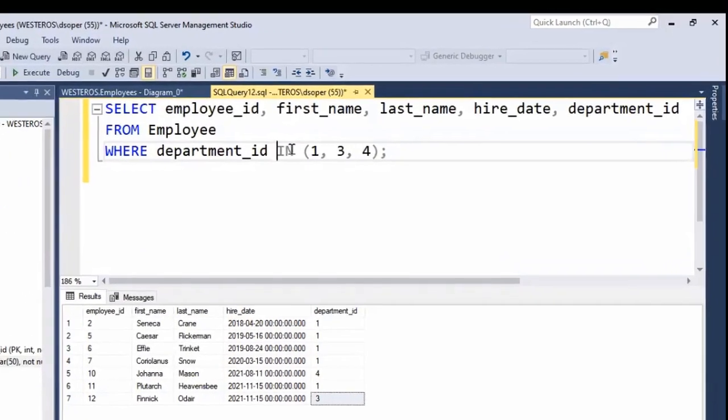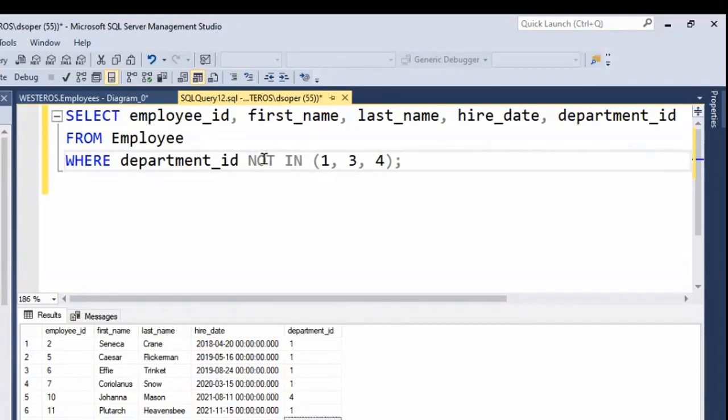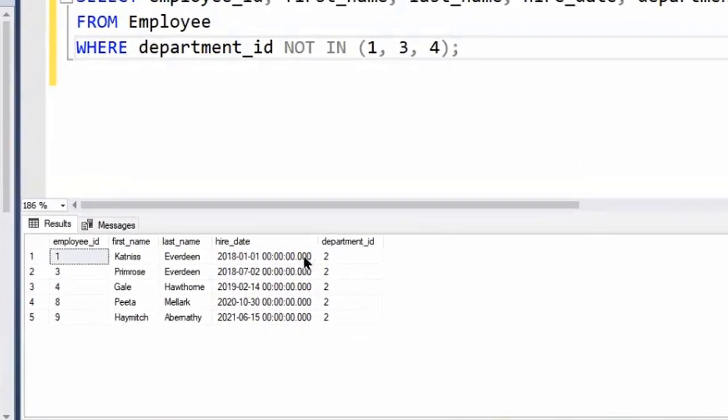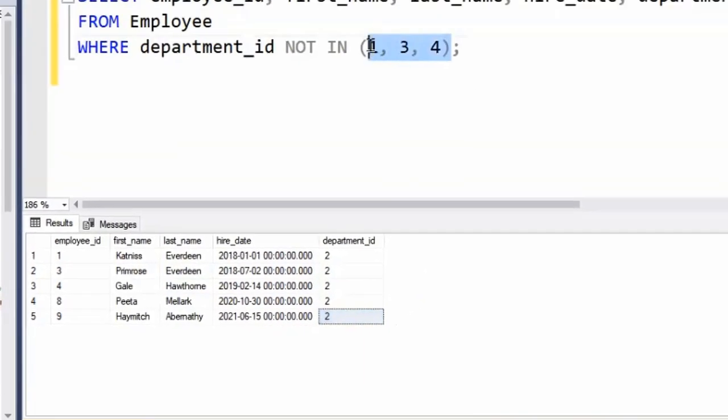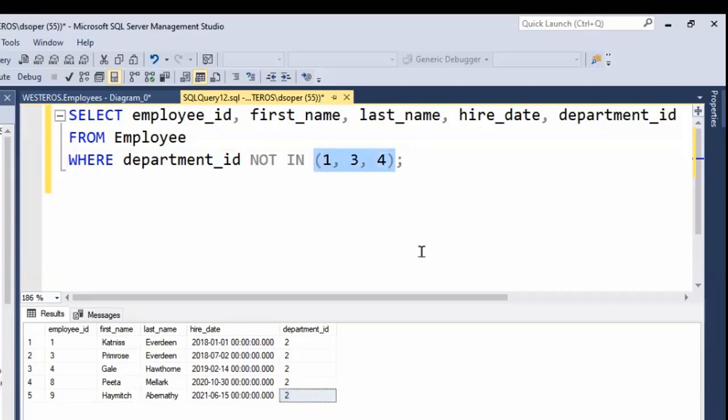So if they are not in this set, it will be the inverse. And you can see here, everyone that returned is not in departments 1, 3, or 4. Our only employees that meet that criteria are those who work in department number 2, because it's not in this specified set of values.